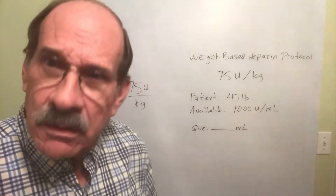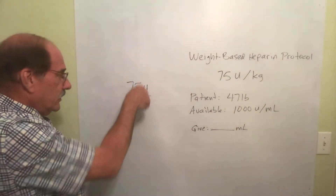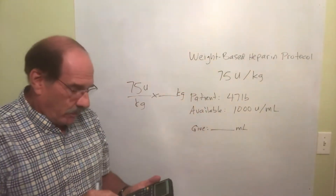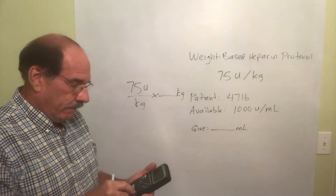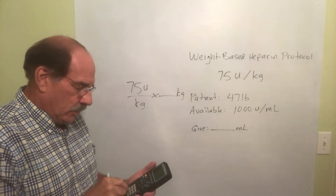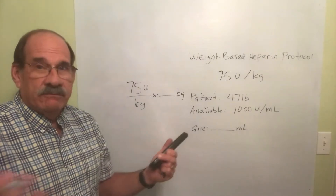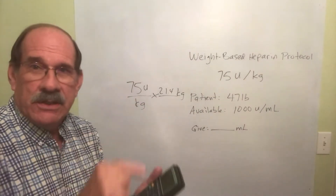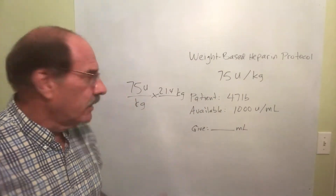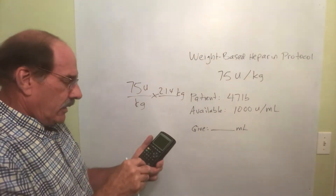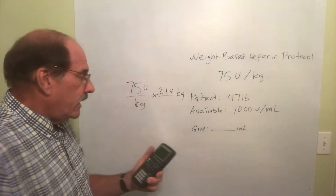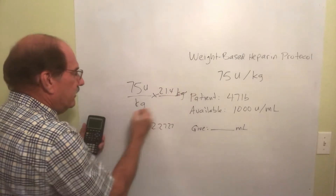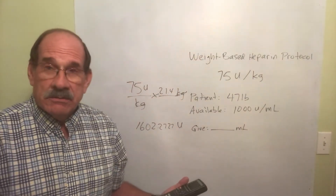You should write it this way: this over this — as a fraction — and now multiply by the weight in kilograms. 47 pounds divided by 2.2 is 21.4. Let's use the number straight from the calculator, unrounded. So 21.4 times 75 is 1602.27272. But that's what? Kilograms cancel — that's how many units I'm going to give my patient.